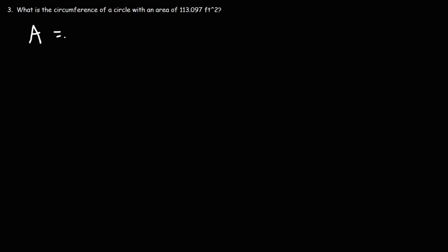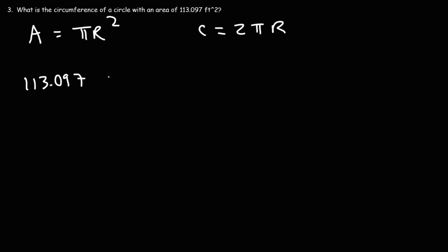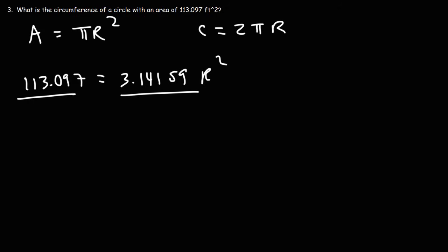The area of a circle is pi r squared. We can use this formula to calculate the radius of the circle, and then once we have the radius, we can calculate the circumference using C = 2πr. So the area is 113.097, which equals pi times r squared. Using pi as 3.14159, we divide both sides by pi: 113.097 divided by 3.14159.